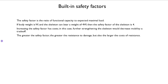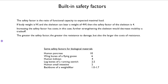The greater the safety factor, the greater the resistance to damage, but the larger the costs of resistance. Here are a few examples: the human pancreas has a safety factor of about 10; the wing bone of a flying goose, about 6; human kidneys, 4; the leg bone of a running ostrich, about 2.5; the small intestine, about 2; and interestingly, the backbone of a weight lifter, only 1 to 1.7.